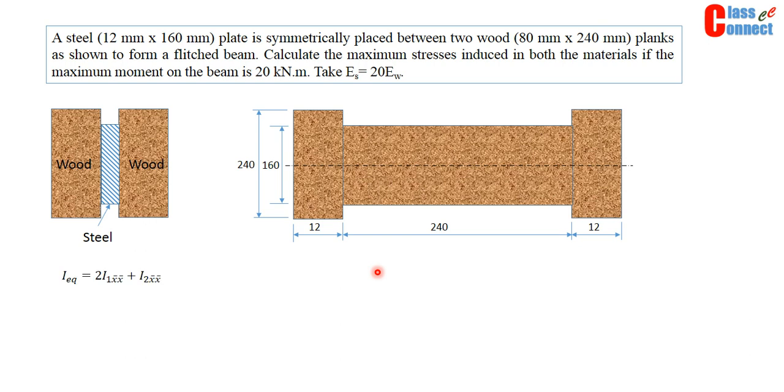So we can find out the section modulus of this wood section that is H type of section. There are two sections, so two such planks. So it is 2 I_1_CG. Here one represents this particular section and two represents this section which is equivalent to steel.